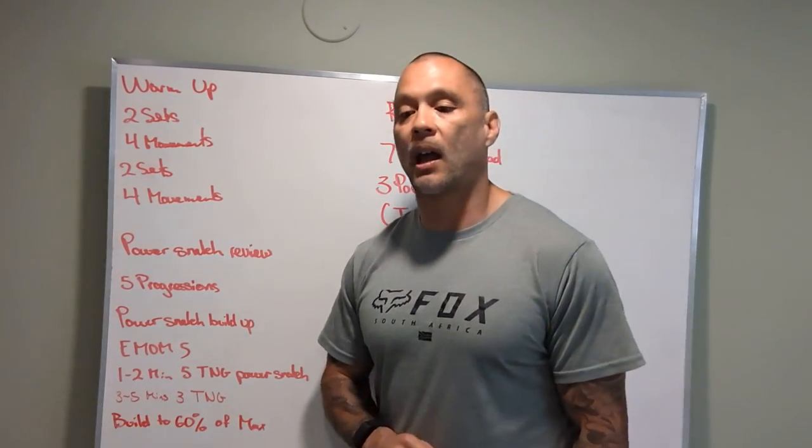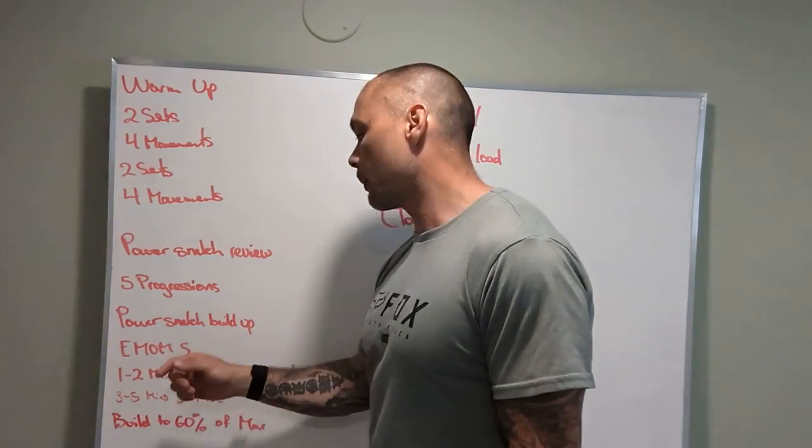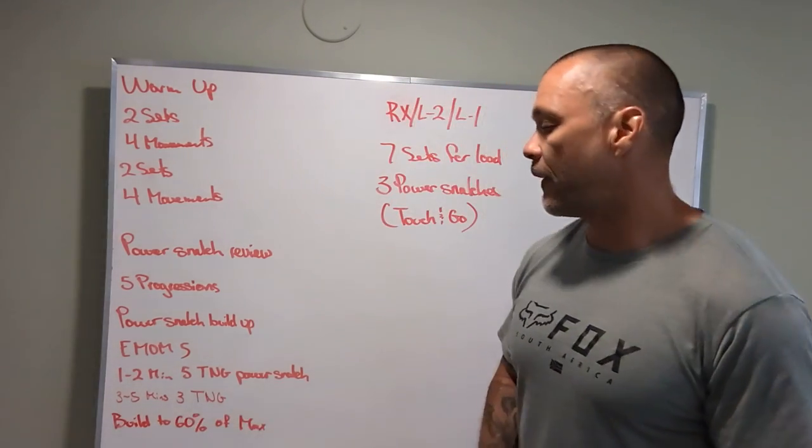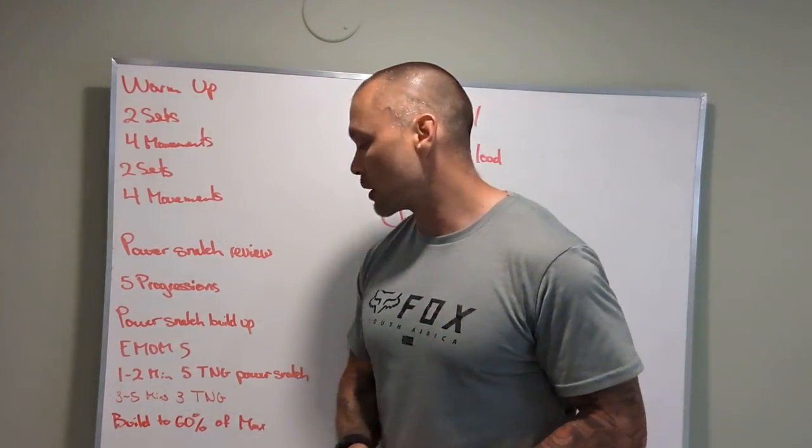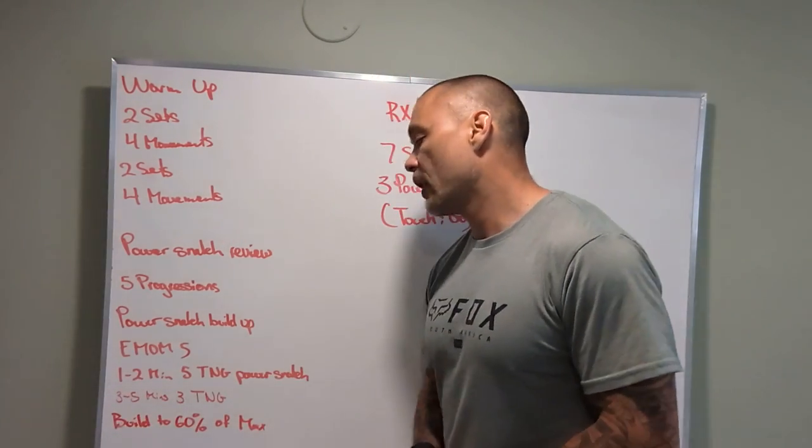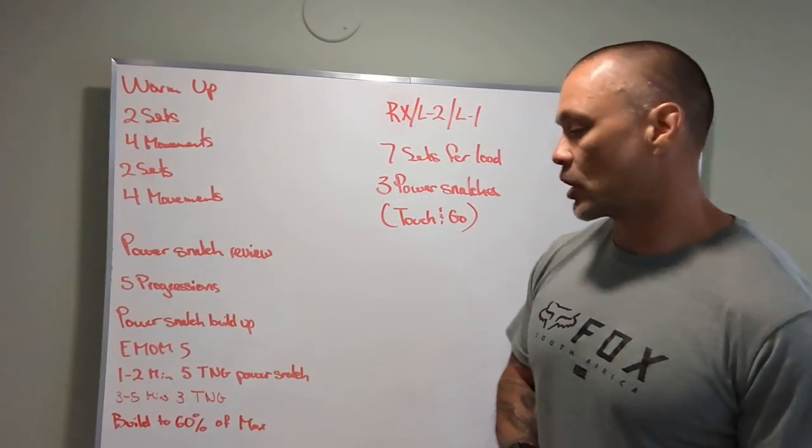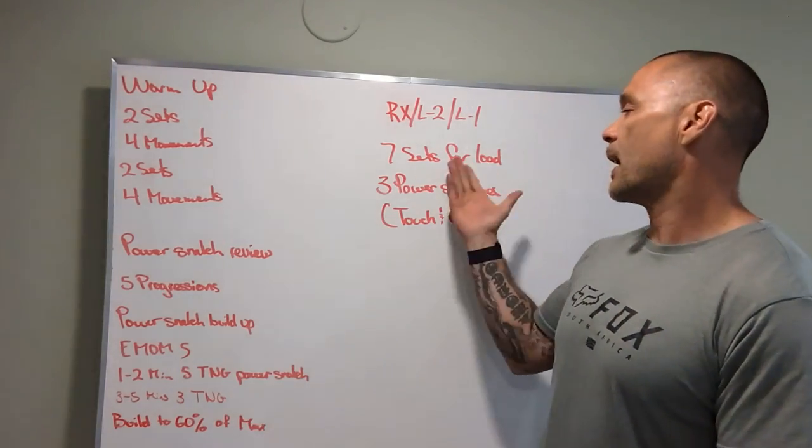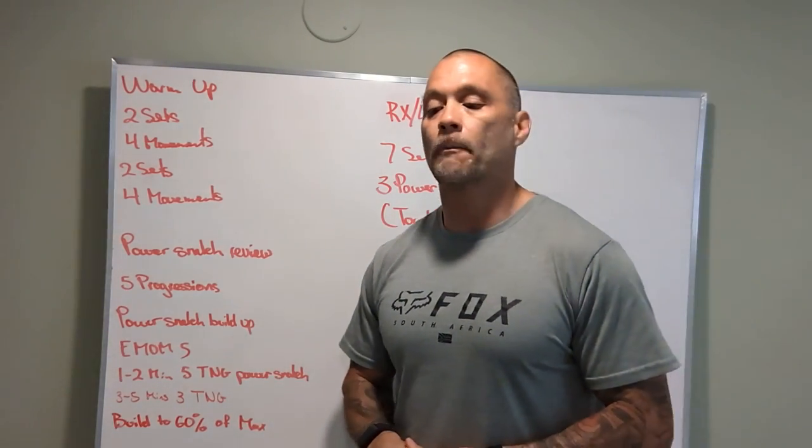And then power snatch build up. We're going to use an EMOM style to build up a little bit. Every minute on the minute, for minutes 1 and 2, we're going to do 5 touch and go power snatches. Minutes 3 to 5, we are going to do 3 touch and go power snatches, and we're going to work up to about 60% of our max. And that's where we probably should start for the workout.